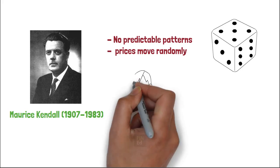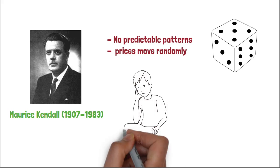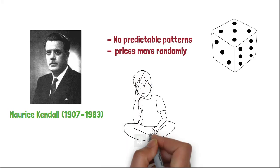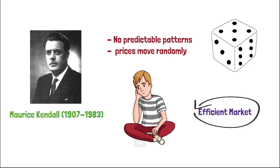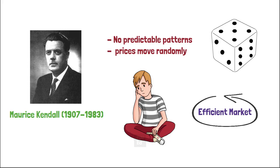The findings were disappointing and disturbing to many financial economists during that time. Many of them tried to reverse their interpretation of Kendall's study. It soon became apparent that random price movement is a building block of a well-functioning or efficient market, not an irrational one.